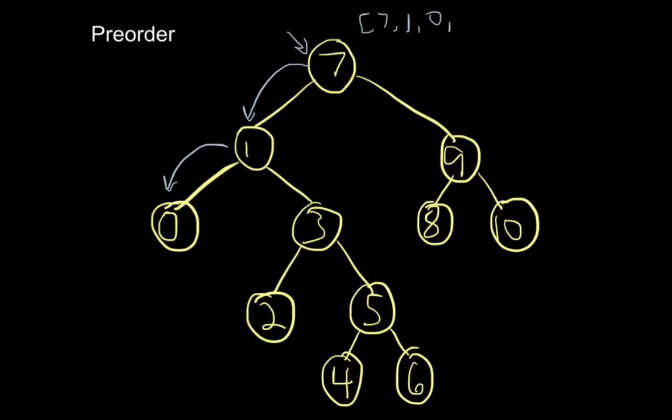Now we come back up because 0 doesn't have any children—it's a leaf node. Then we come over to 3, which is the next value.